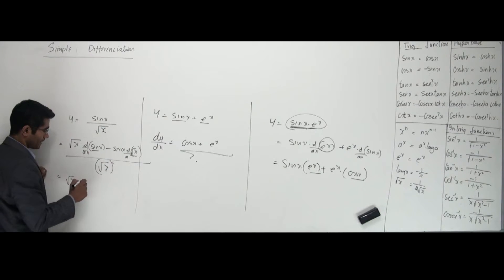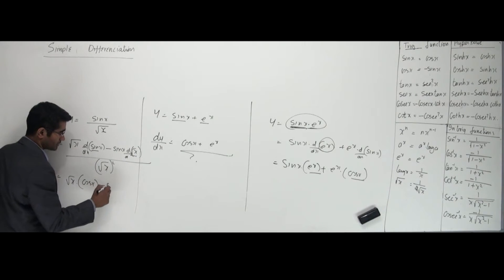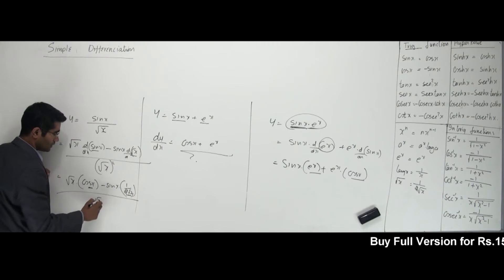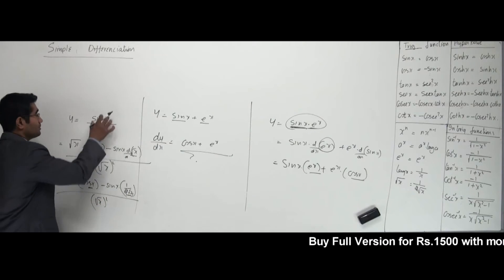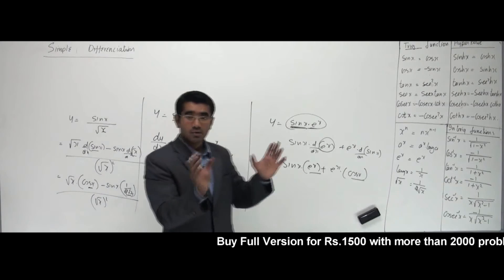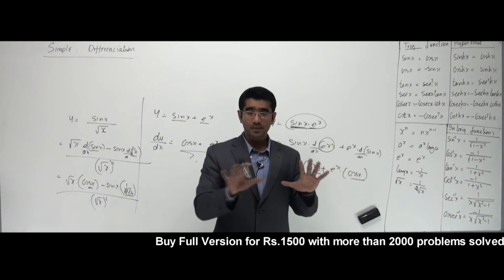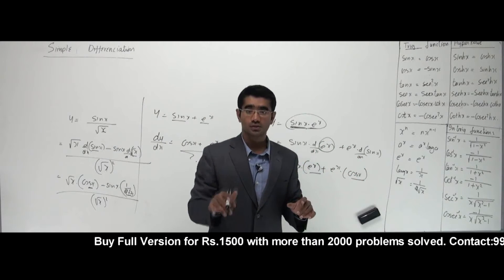So root x remains and differentiation of sin x is cos x minus sin x remains. Differentiation of root x is what? 1 by 2 root x. Now what am I doing here? Differentiation is only so much. And the rest of it is how do I separate the given functions and get them alone so that I can differentiate it. That's all about it. This is what is called learning differentiation.